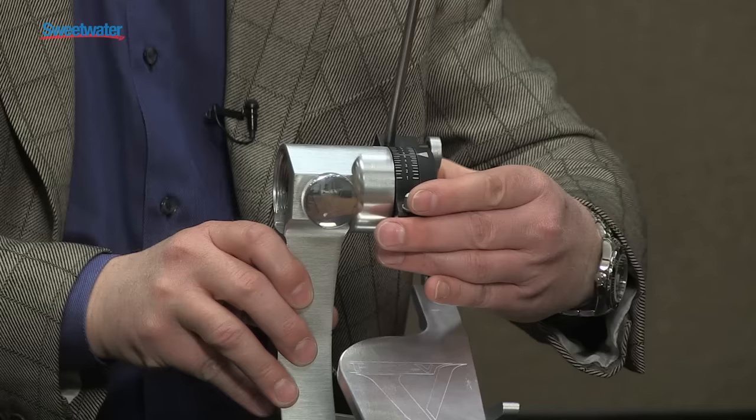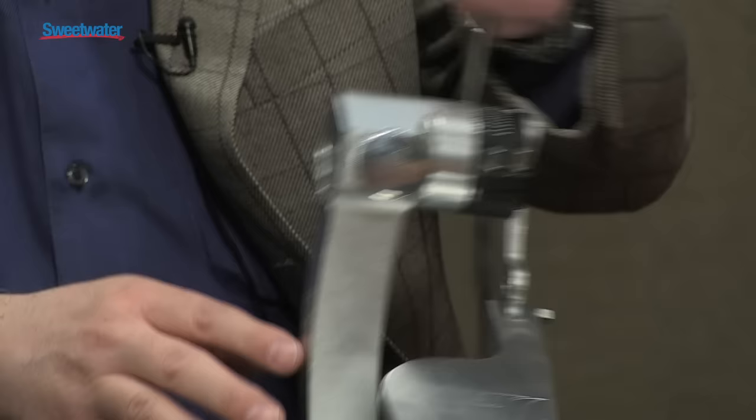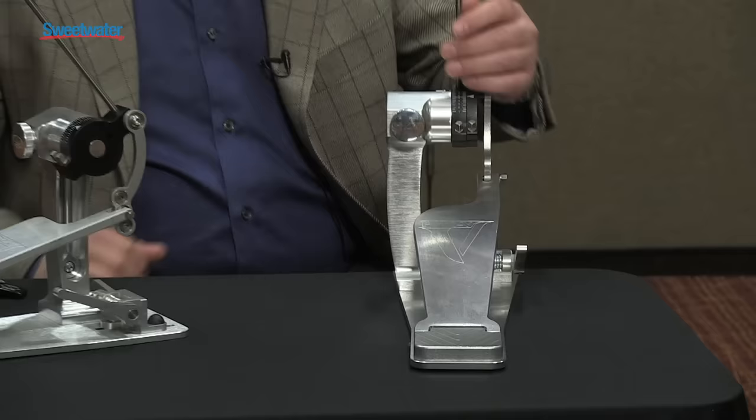As far as adjusting your spring pressure, that's really the simple part. You just turn this knob, which is conveniently located right here on the tower. Turn it to the right to tighten it, left to loosen it. It's just that simple. So no longer do you have to mess around with the old ways of adjusting spring pressure.